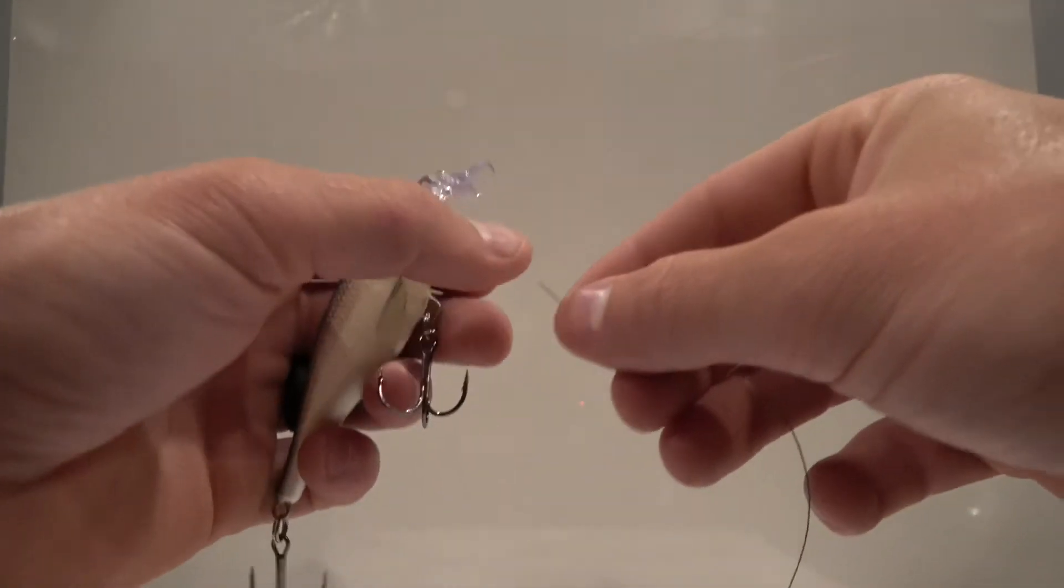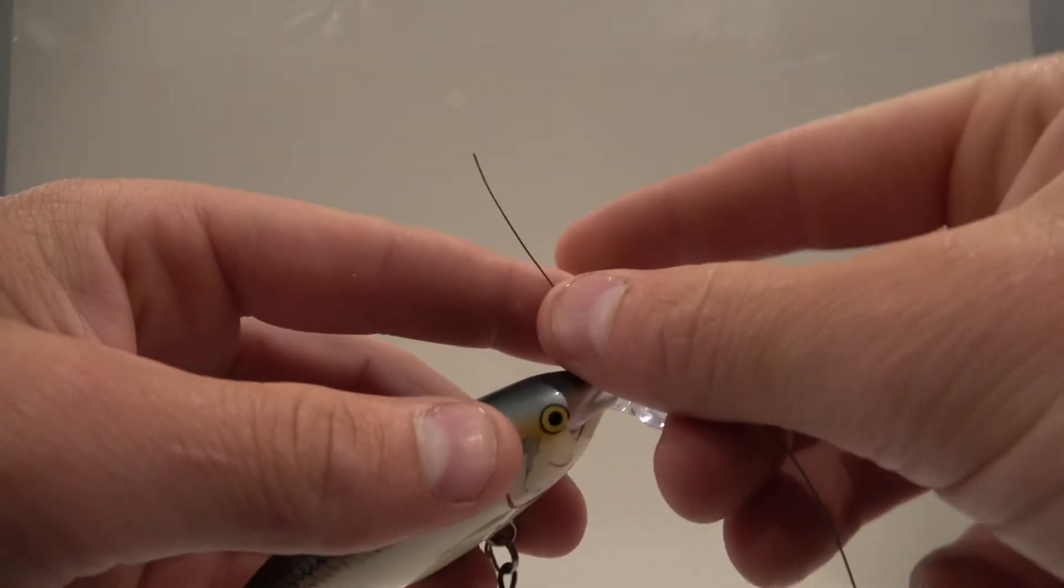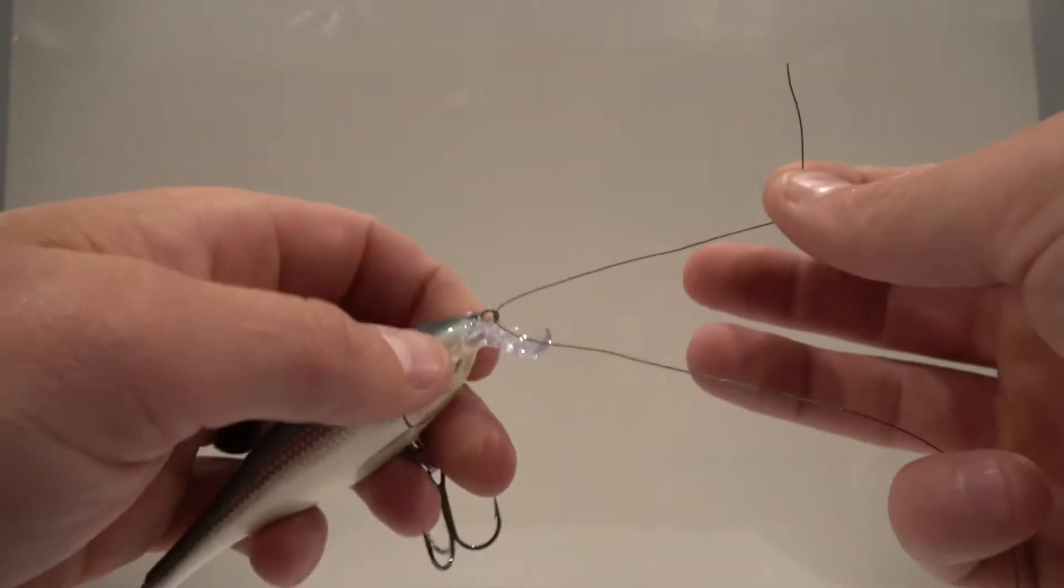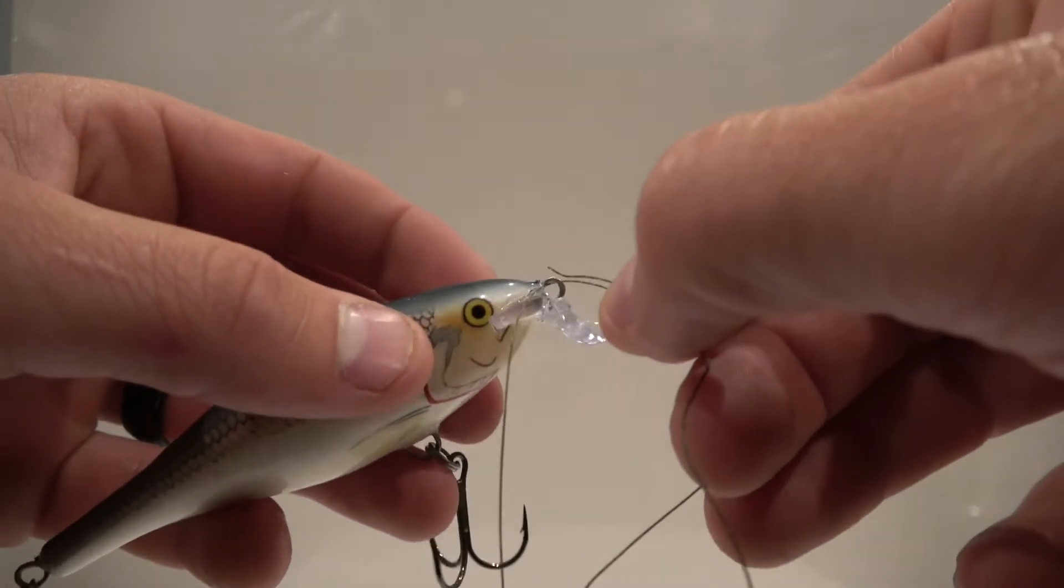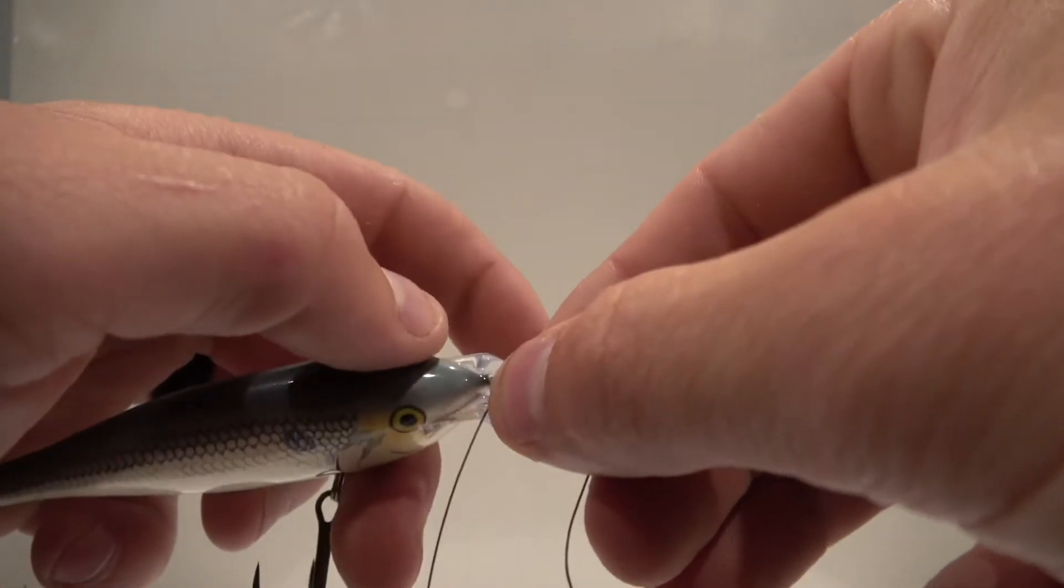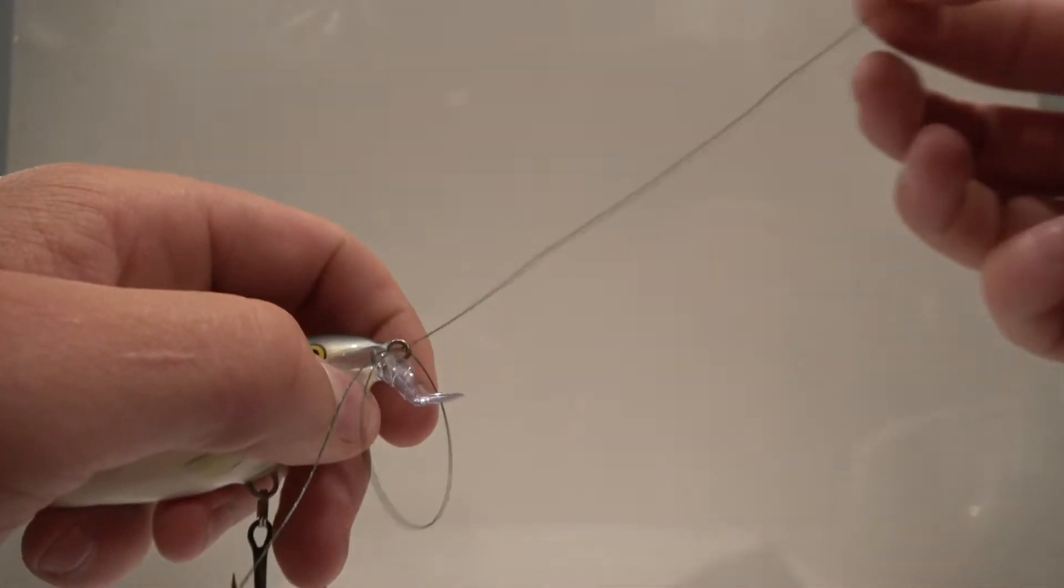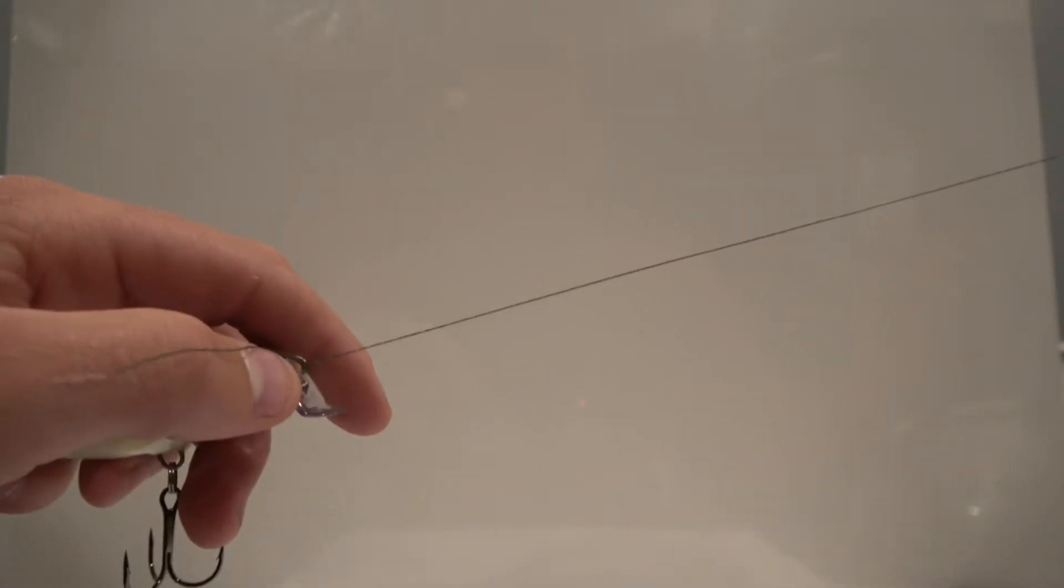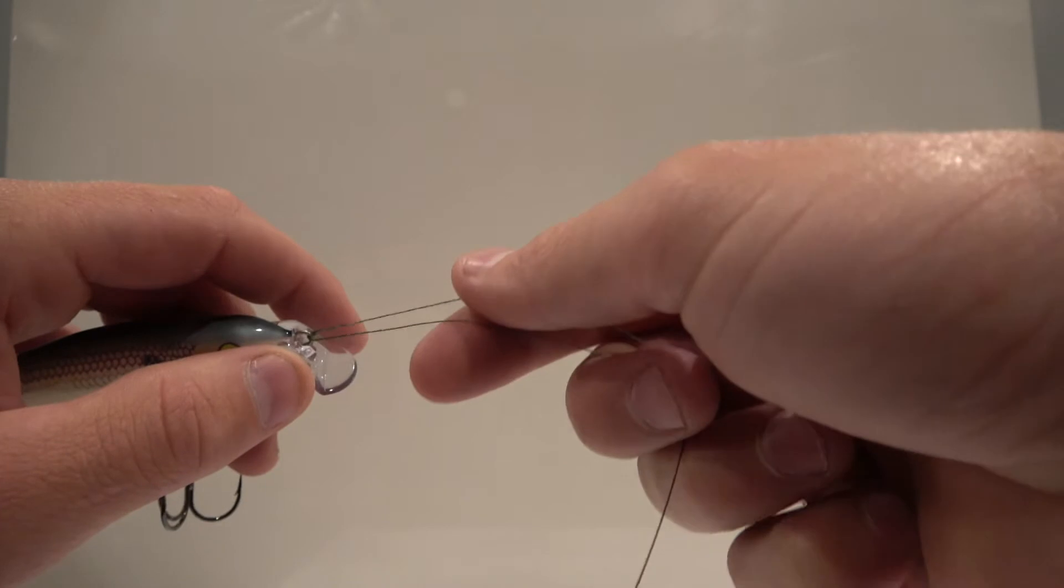Step one is take that line, stick it through your eye like that. Go through it twice. Once you have that, pull about, I like to pull roughly 10 inches through, get it nice and uniform.